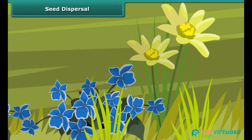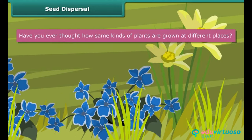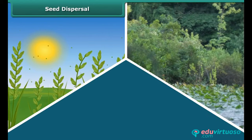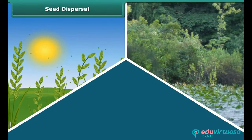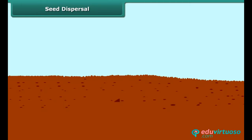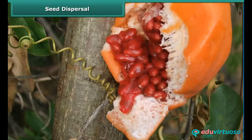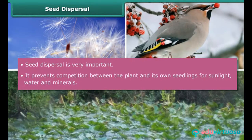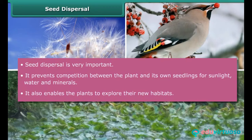Seed dispersal. We know that plants cannot move from one place to another. Have you ever thought how the same kinds of plants are grown at different places? This happens because seeds are dispersed to different places. Some get blown off with the wind to far off places, some seeds are carried away by water, while some get dispersed by insects or animals. When the seeds reach the soil, they germinate into a new plant. Some seeds are also dispersed when the fruit bursts with sudden jerks. Seed dispersal is very important because it prevents competition between the plant and its own seedlings for sunlight, water and minerals. It also enables the plants to explore new habitats.